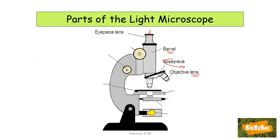There are usually three objective lenses: the low power lens, the medium power lens, and the high power lens, though some school microscopes may have only two. Be very careful when naming the parts — you must use the word 'objective lens' to distinguish it from the eyepiece lens.